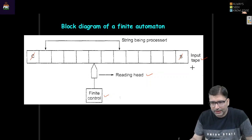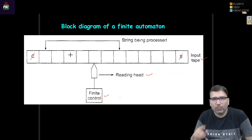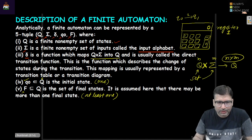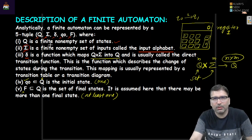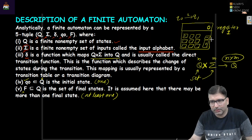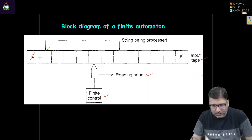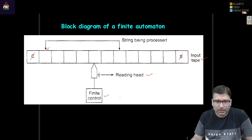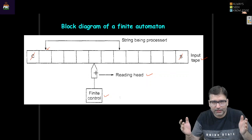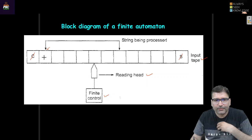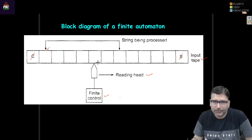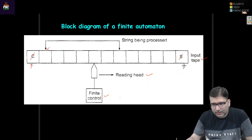The input tape is divided into multiple blocks or cells, and each cell can contain one input symbol from Σ. If an automata needs to accept a string of length four, five, or two, there must be an equal number of cells available on the input tape. Two special symbols define the left end and right end of the input.